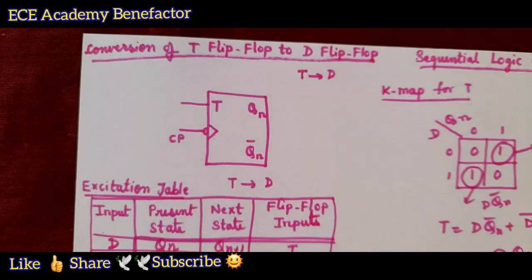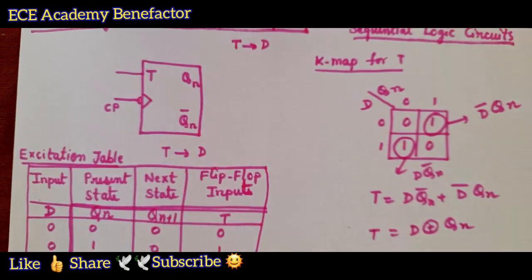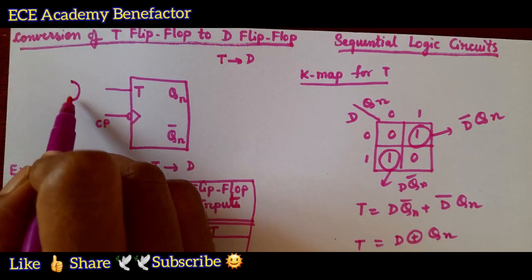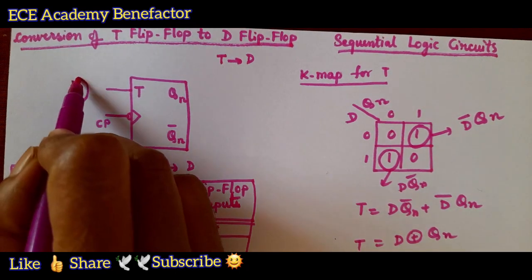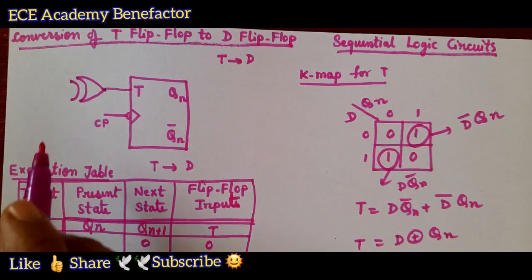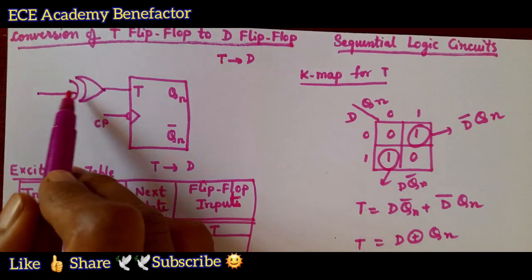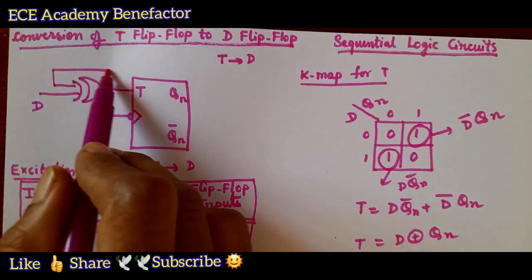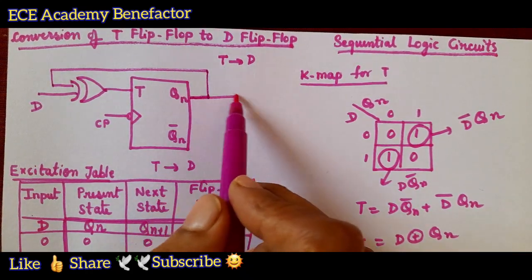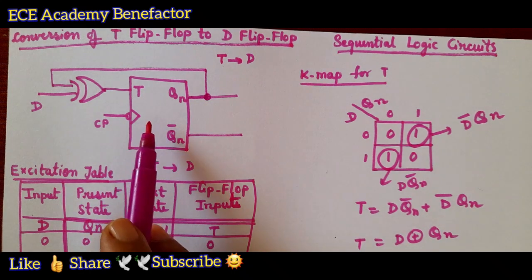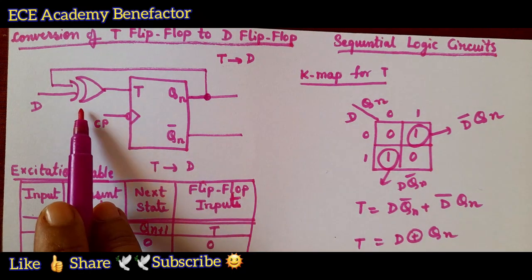We can place an XOR gate here. Its inputs are D and Q_n. We need to mark the connection point to show it is connected. In this way we can convert a T flip-flop to a D flip-flop.